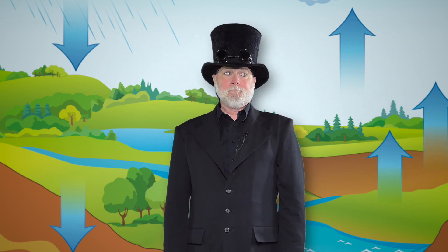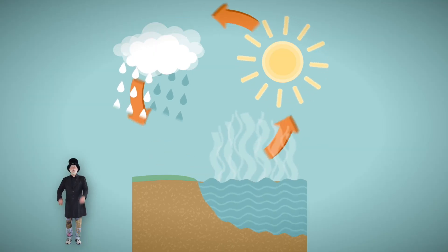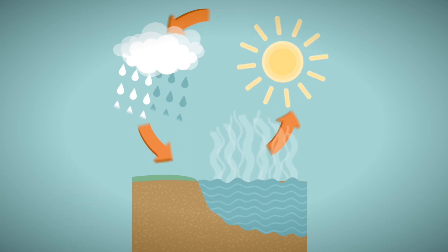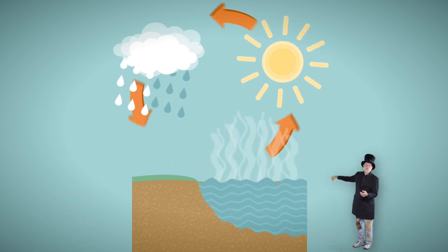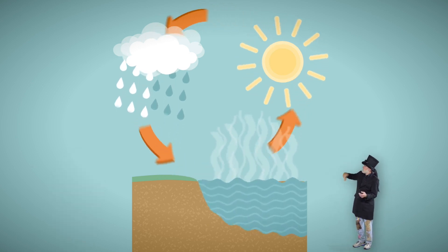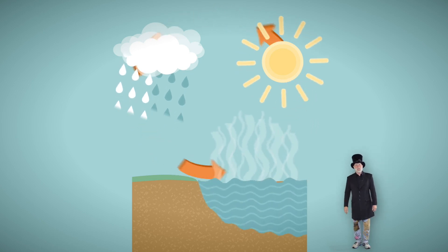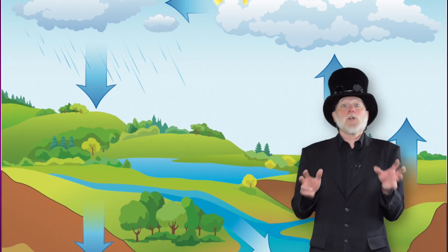The water cycle. No, that's a popsicle. The water cycle — the process by which water moves continuously through the earth and the atmosphere. It works like this.